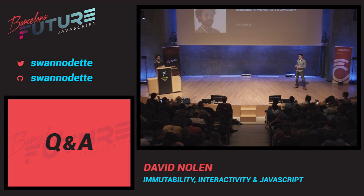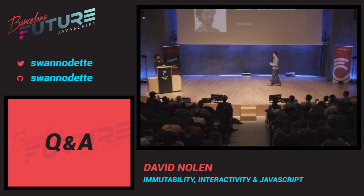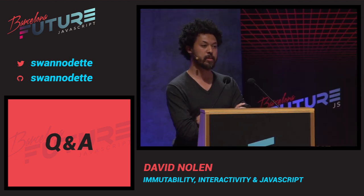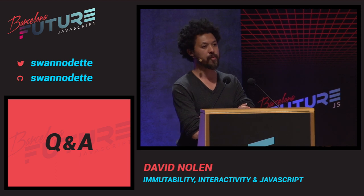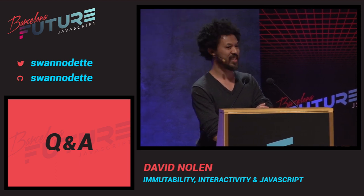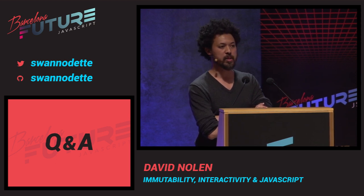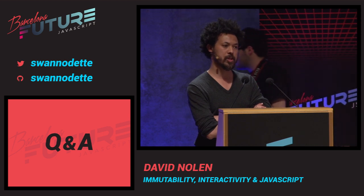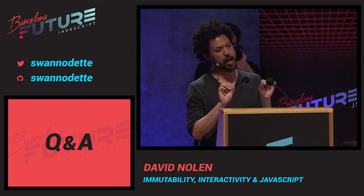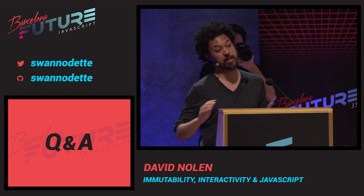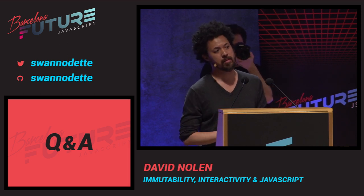Question: if you have an existing app built on Backbone or another MVC-style framework, would you propose a complete rewrite, or could you introduce this paradigm gradually? That sounds like a lot of work. It is possible — there have been quite a few experiments. You could do a collection that exposes a Backbone API but under the hood it's immutable. That's completely doable. The API is completely separate from how you store that state.